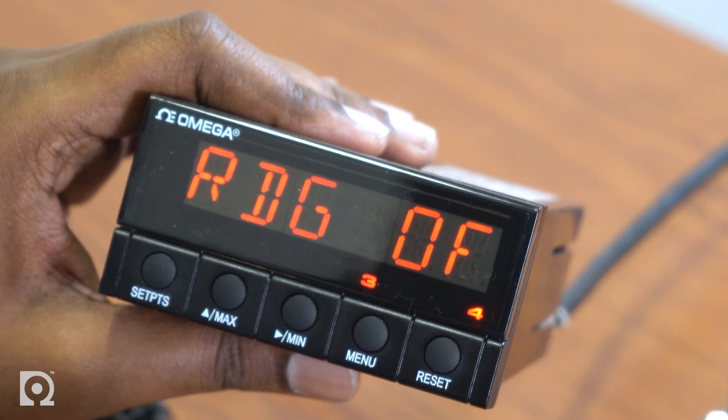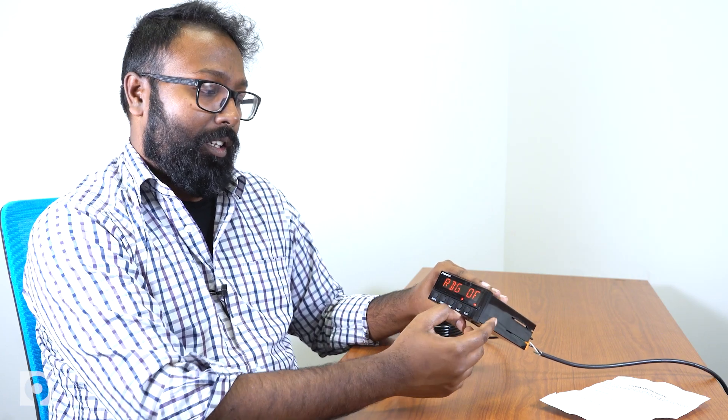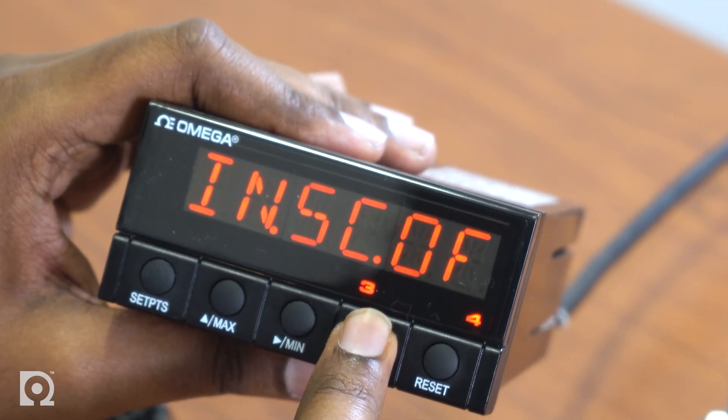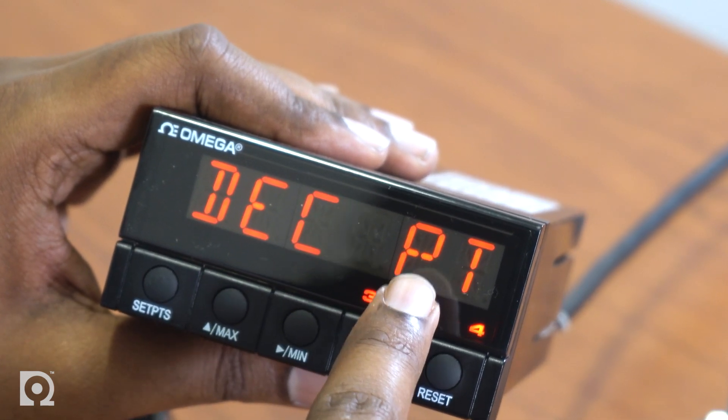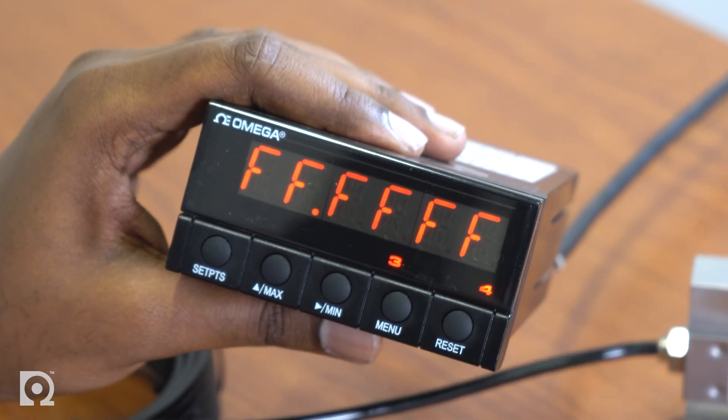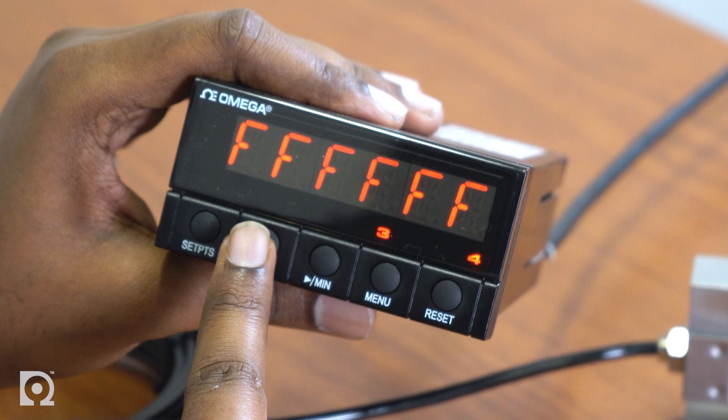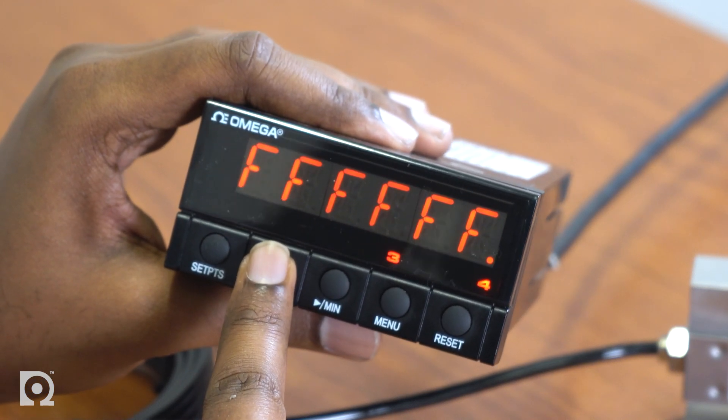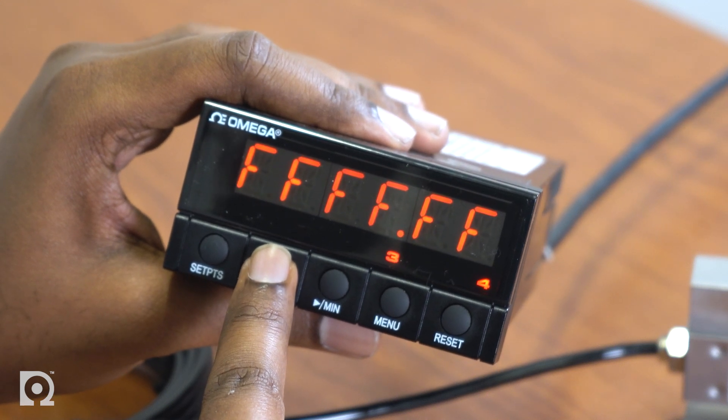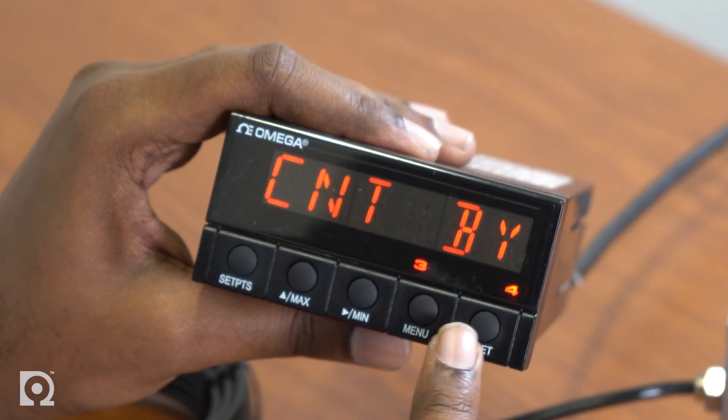It'll flash stored, and it'll take you to the next menu item, which is RDG-OF, which also stands for reading offset. Now you don't need to do anything as of yet. So press the menu button again, and again, till you see DECPT, which is your decimal point. Now press the min key once to enter this menu, and you'll see a bunch of Fs and the decimal point flashing in between. You can adjust your decimal point to set it wherever you want. In this instance, since we have a thousand pound load cell, I'm going to set it to read FFFF. Use the max key, and you can just scroll through the Fs. Press the menu button once. It'll flash stored, and then you'll go to the next item on the menu, which is count by. You don't need to do anything else. The meter is all set. It's programmed. Press the reset button twice. You'll go back to run mode.